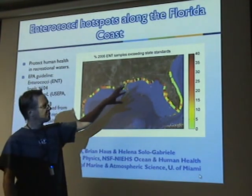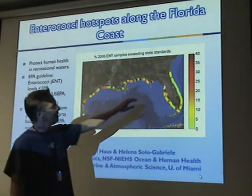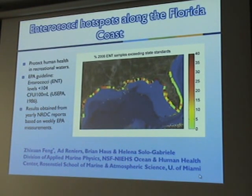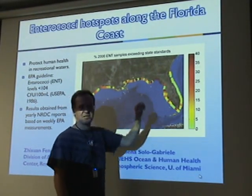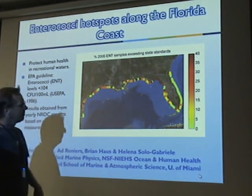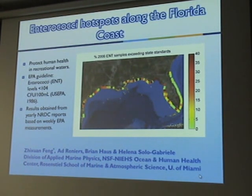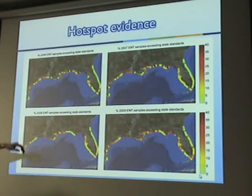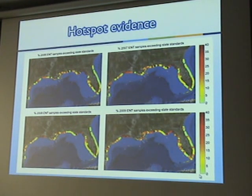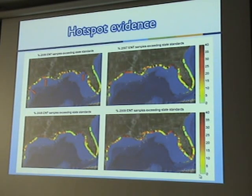These dots correspond to the approximate location of the beach, and the number on the right is the exceedance percentage — so if the number is 40, then 40% of the weekly samples exceed 104 CFUs per 100 milliliters, and hence the water is deemed to be unsafe. There's a lot of spatial variability in the distributions. The Atlantic Ocean-facing side seems to be relatively clean. This is for 2006 through 2009, and it does change year by year, but you can point at locations where there are persistently high exceedance percentages of enterococci.